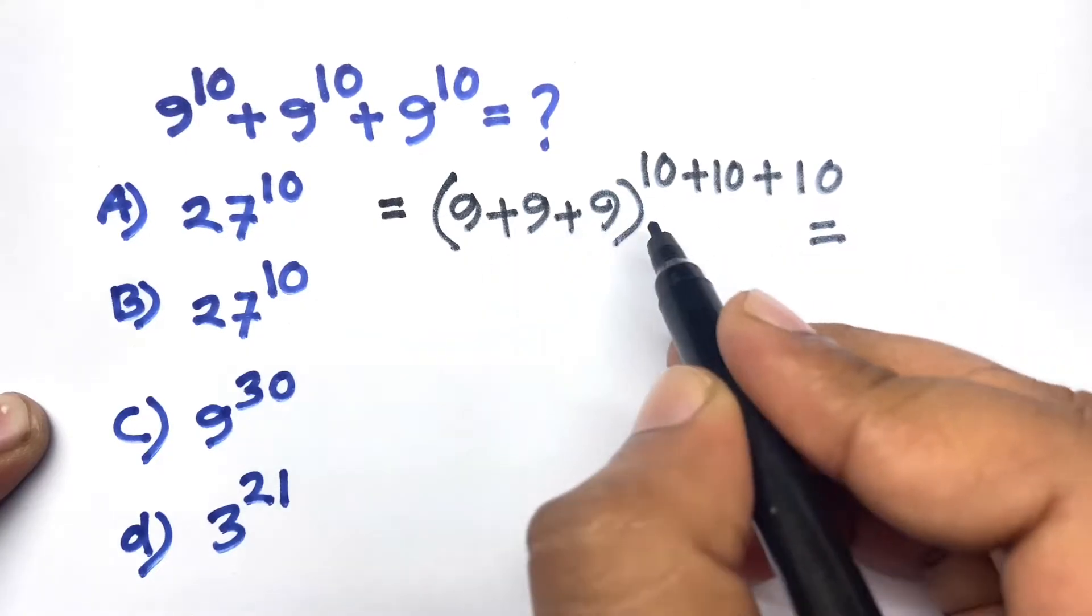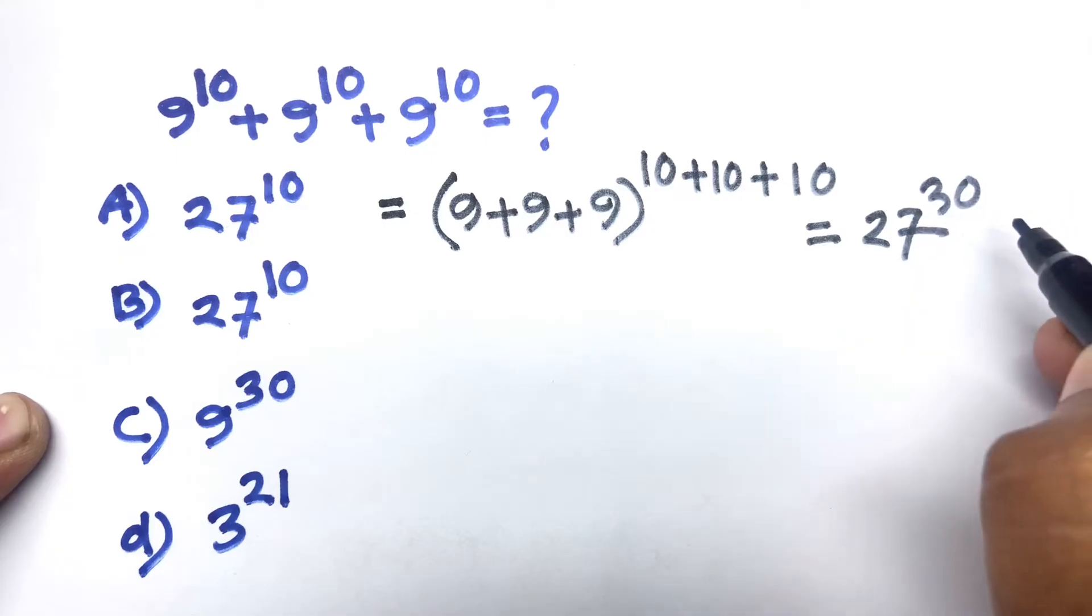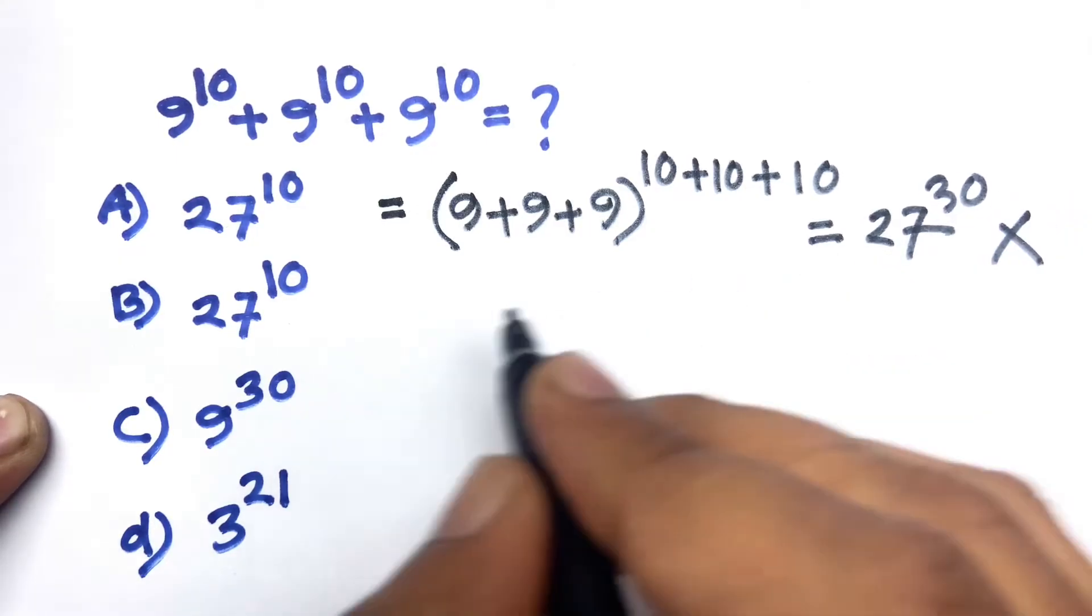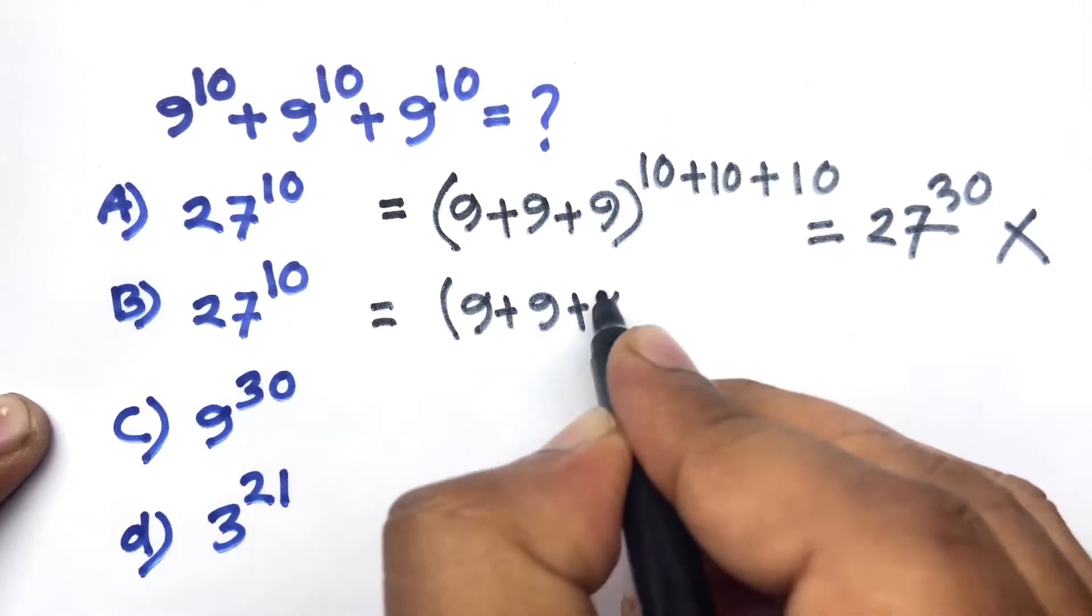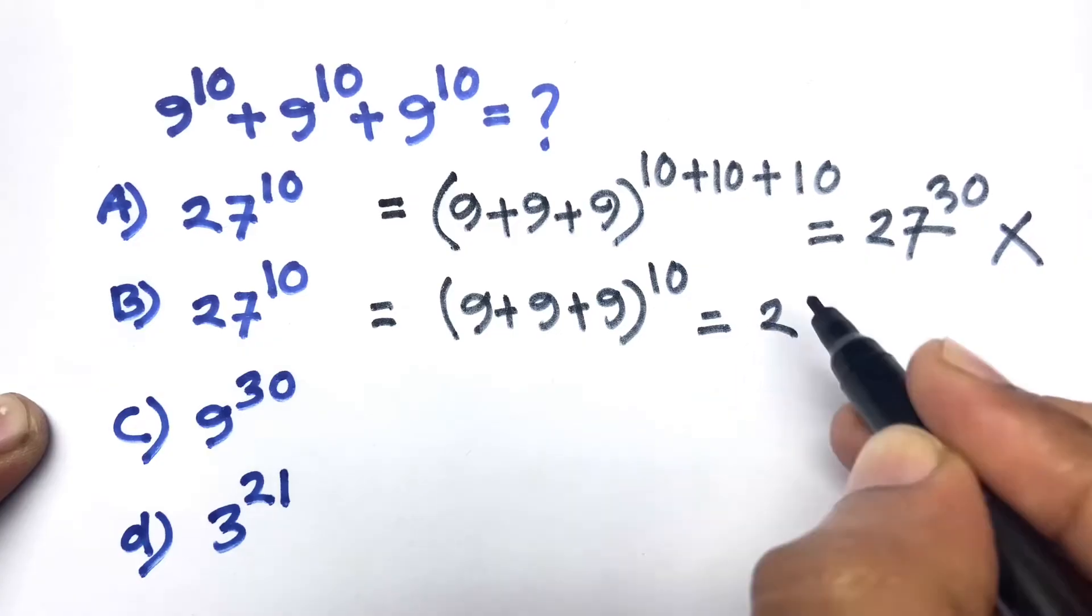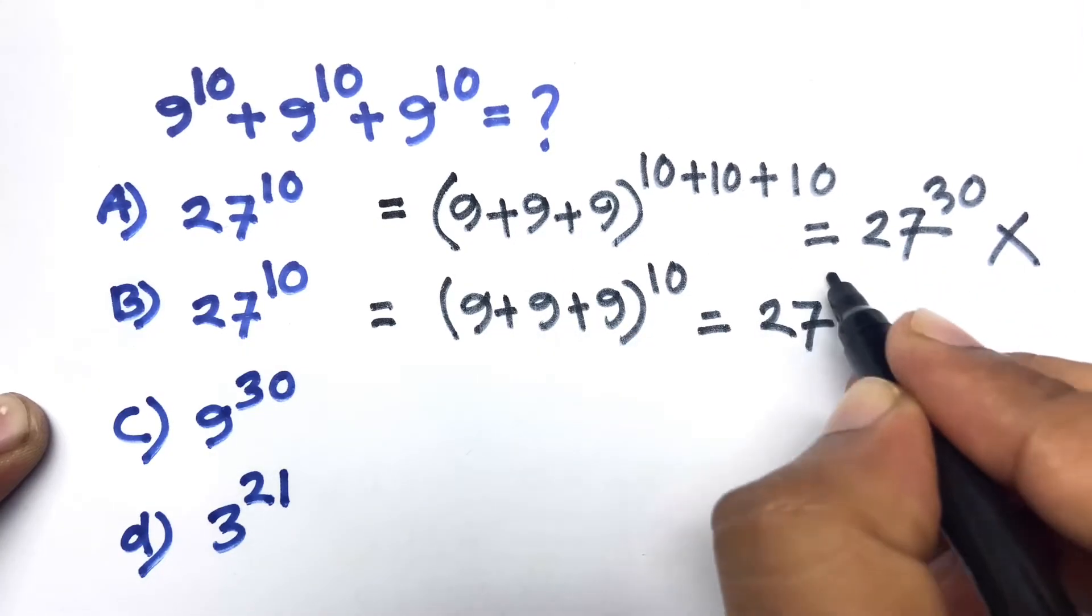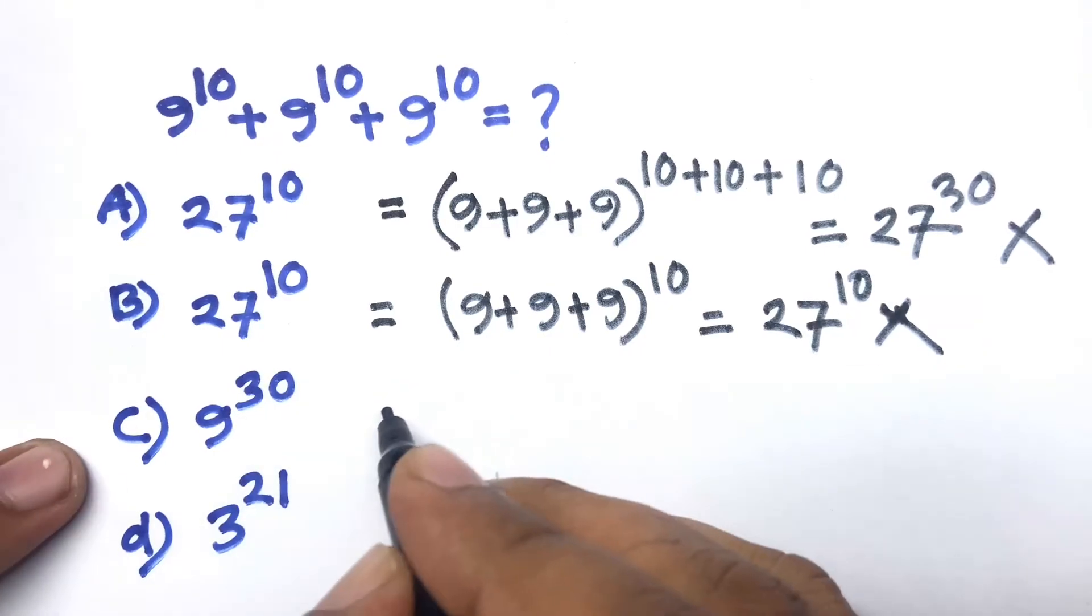9 + 9 + 9 equals 27 and power is 30, so it is a wrong answer. Again, sum of base, power is same this time. I can see easily 27^10, it is also the wrong answer.